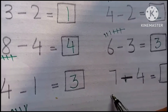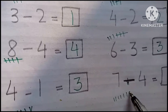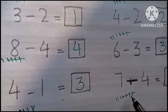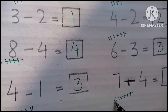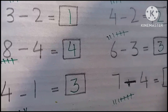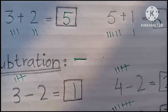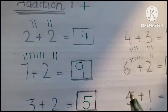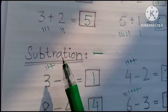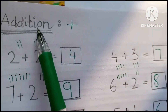1, 2, 3, 4, 5, 6, 7, minus 4: 1, 2, 3. 7 minus 4 is 3. So these are the questions of addition and subtraction.